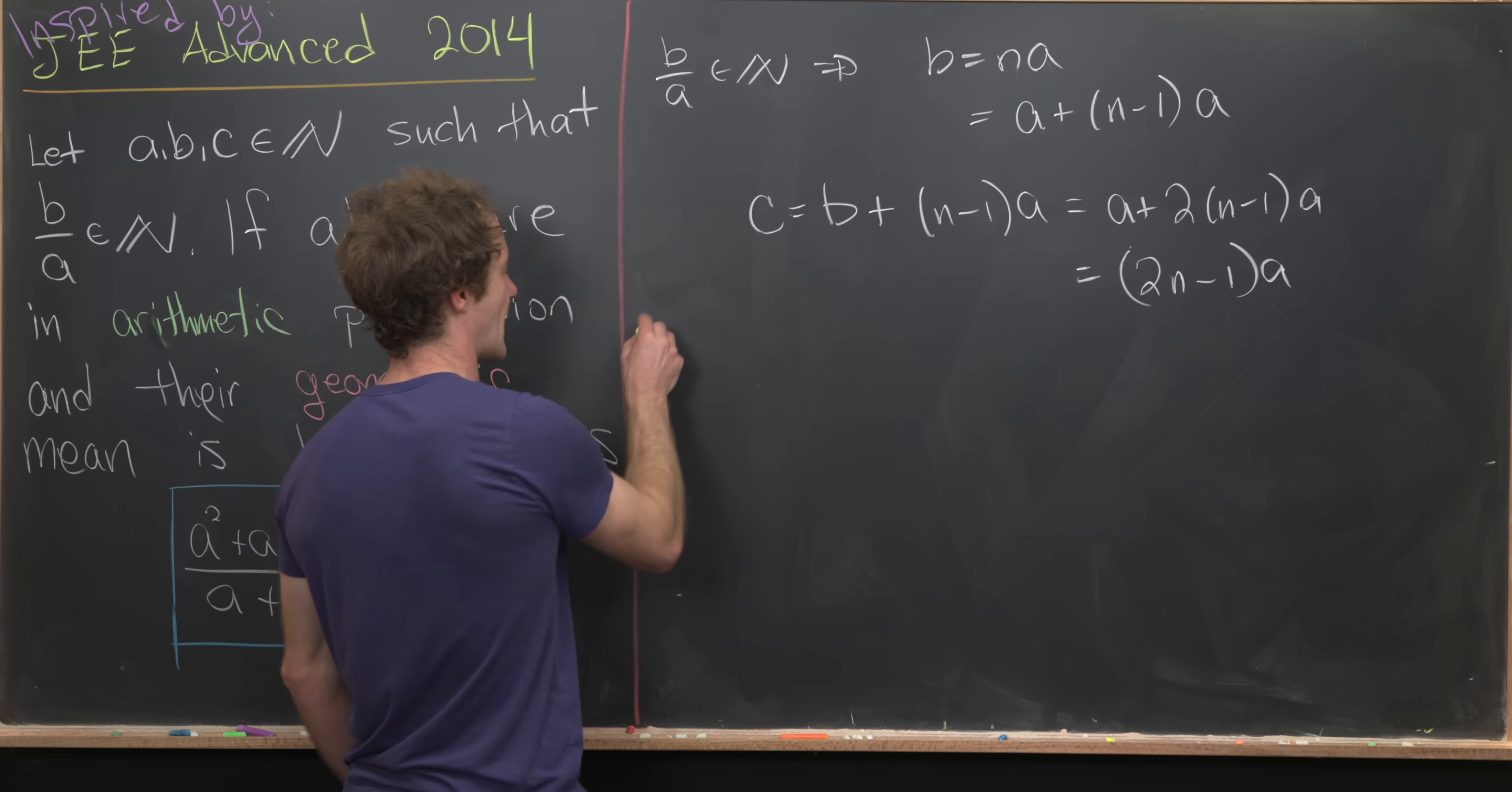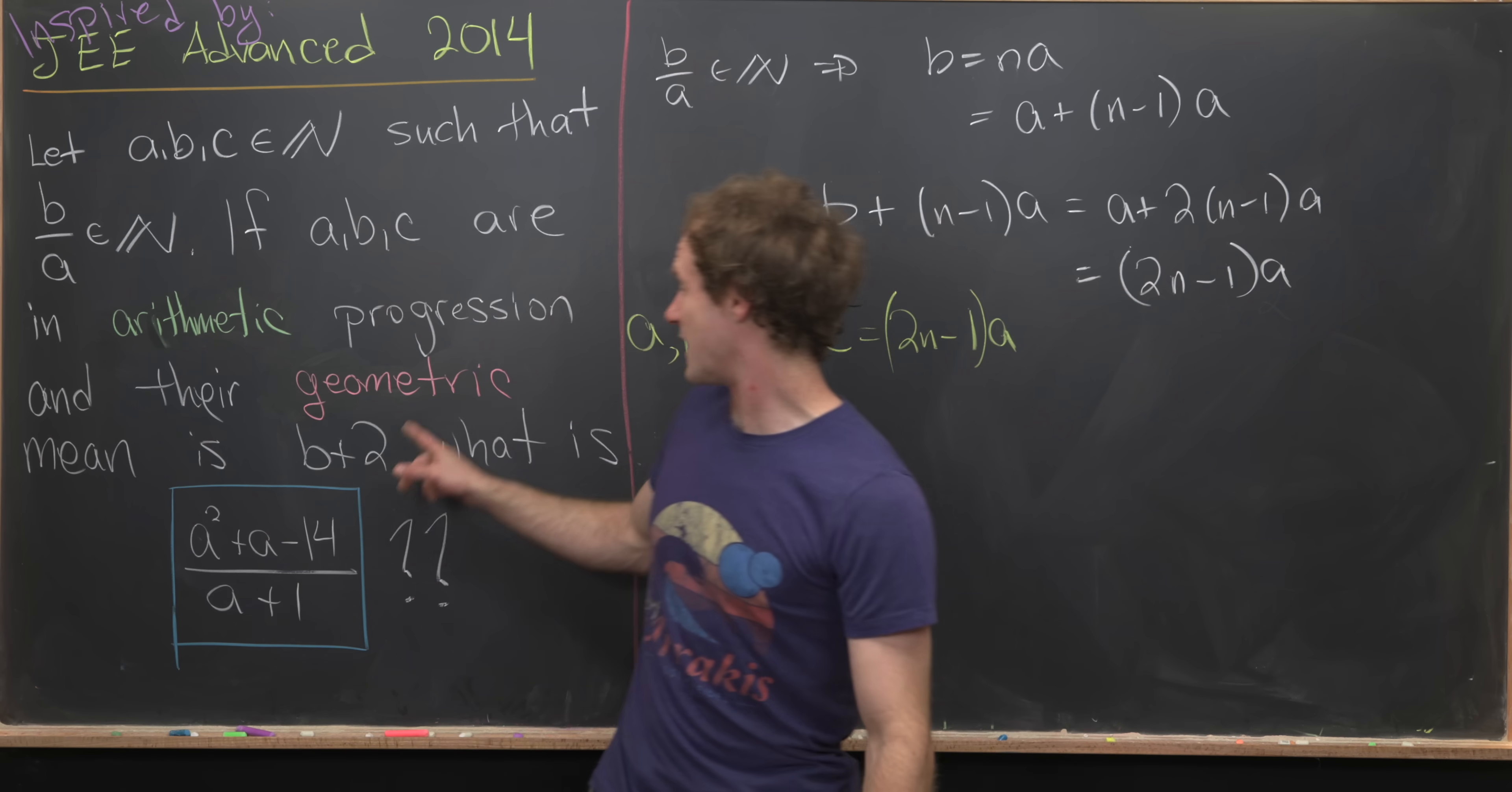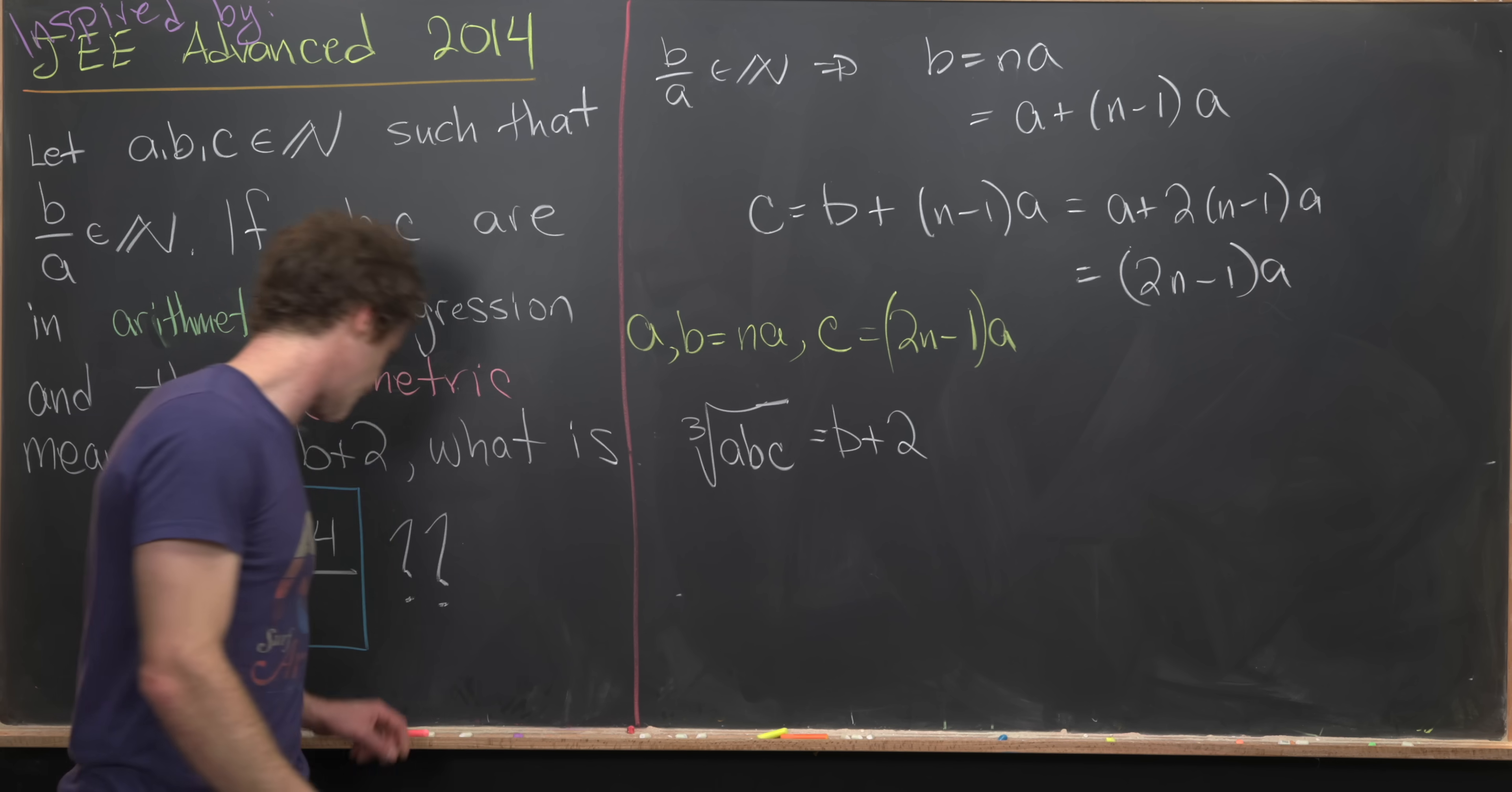So notice we've got a value for A, which is just A. We've got a value for B, which is N times A. And we have a value for C, which is 2N minus 1 times A. Now we want to use this fact that their geometric mean is B plus 2 and see if we can get anything out of that. So the geometric mean of A, B, and C will be the cube root of A, B, C. And this is going to be equal to B plus 2.